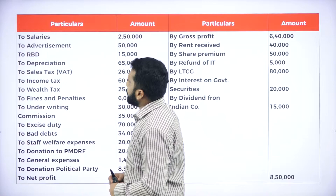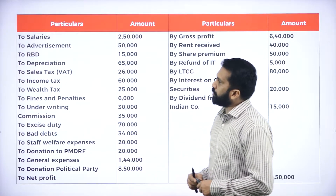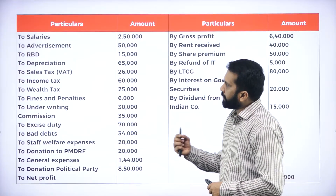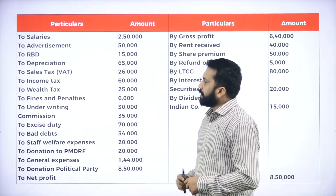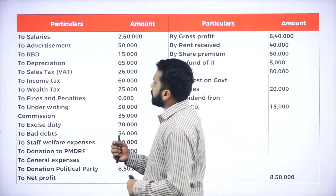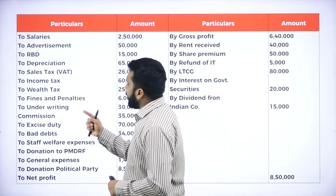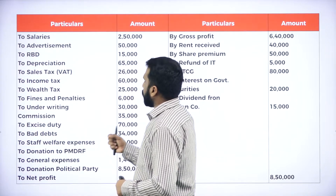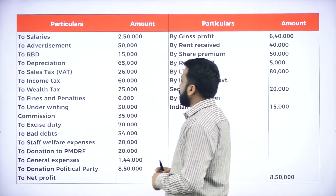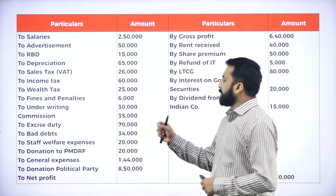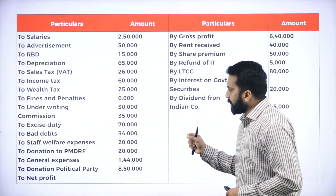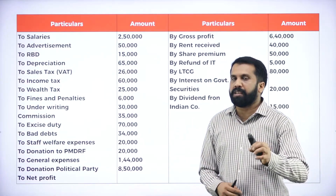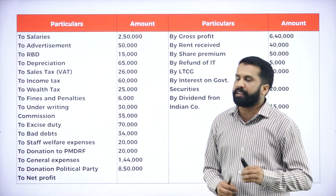The debit side items are: Salary, Advertisement, RBD, Depreciation, Sales tax, Income tax, Wealth tax, Finance penalty, Underwriters commission, Excise duty, Bad debt, Staff welfare expense, Donation to PMDRF, General expense, Donation to political party, and finally Net profit.